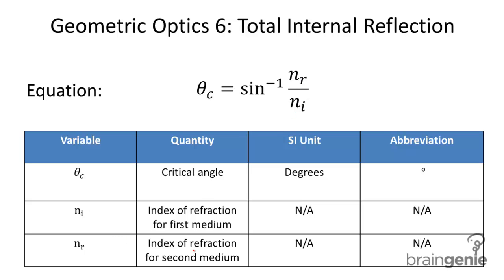nr is the index of refraction for the second medium, and ni is the index of refraction for the first medium. You can also write this as inverse sine of n2 over n1.